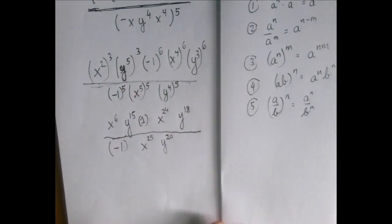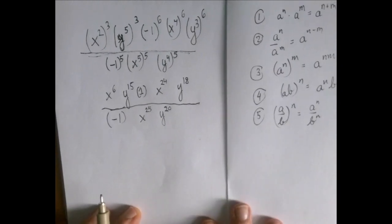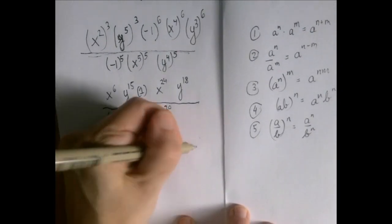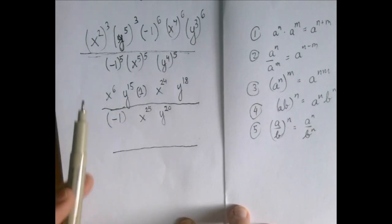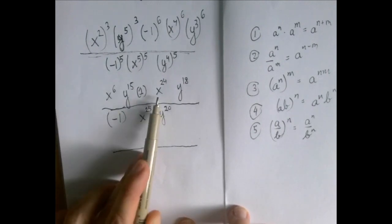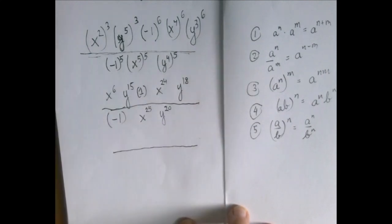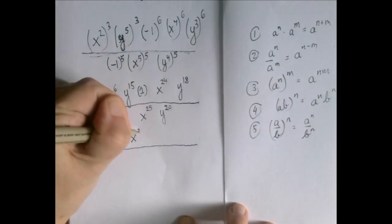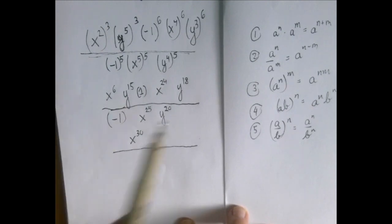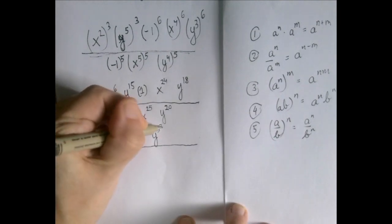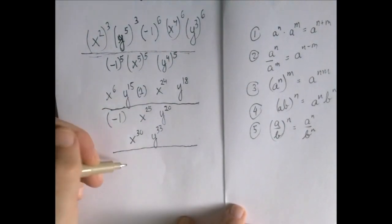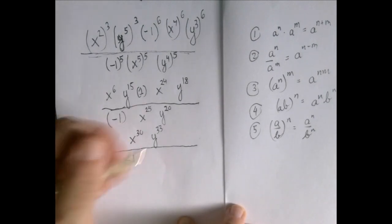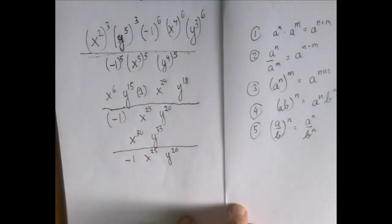Next, we consolidate the expressions in both numerator and denominator. In the numerator, the only number is one. For the X values, X to the sixth times X to the twenty-fourth is X to the thirtieth. And Y to the fifteen times Y to the eighteen is Y to the thirty-three. In the denominator, we have negative one, X to the twenty-five, and Y to the twenty.